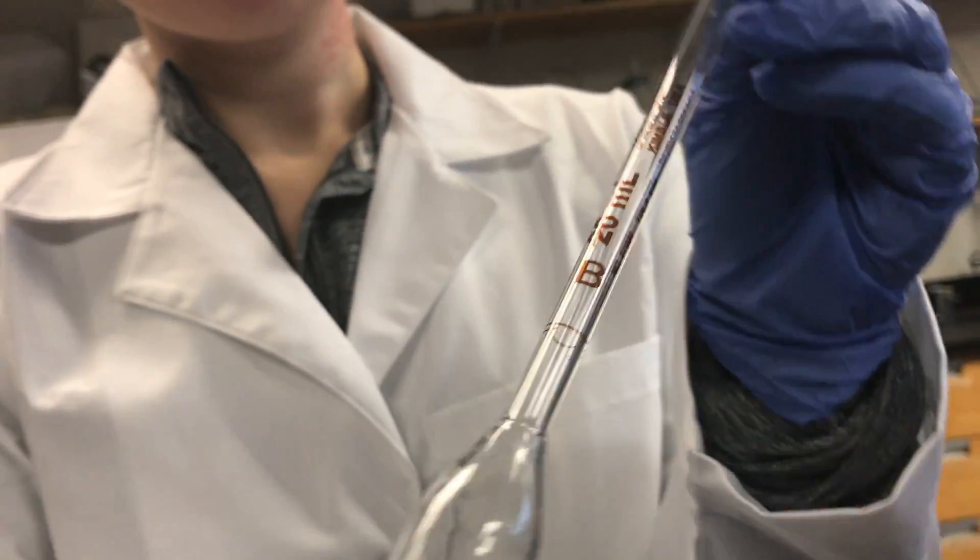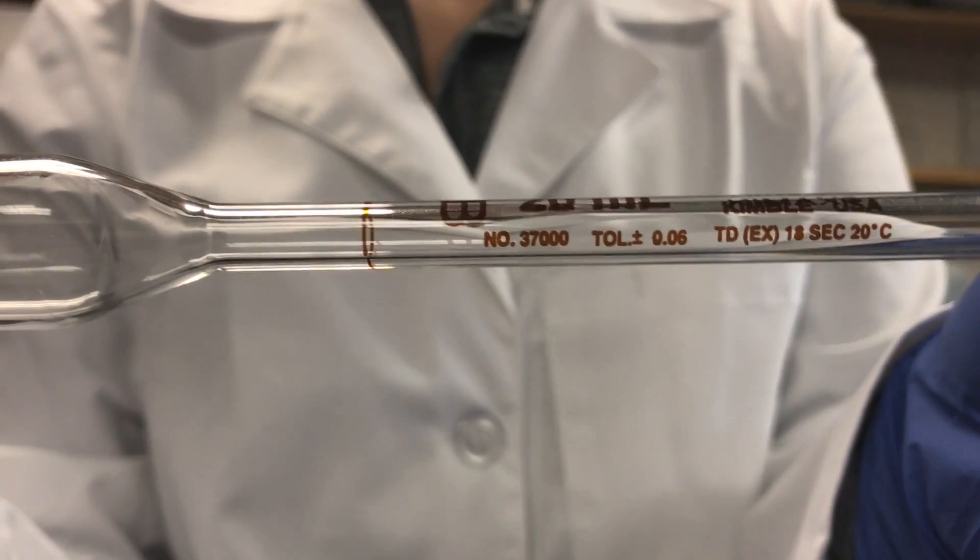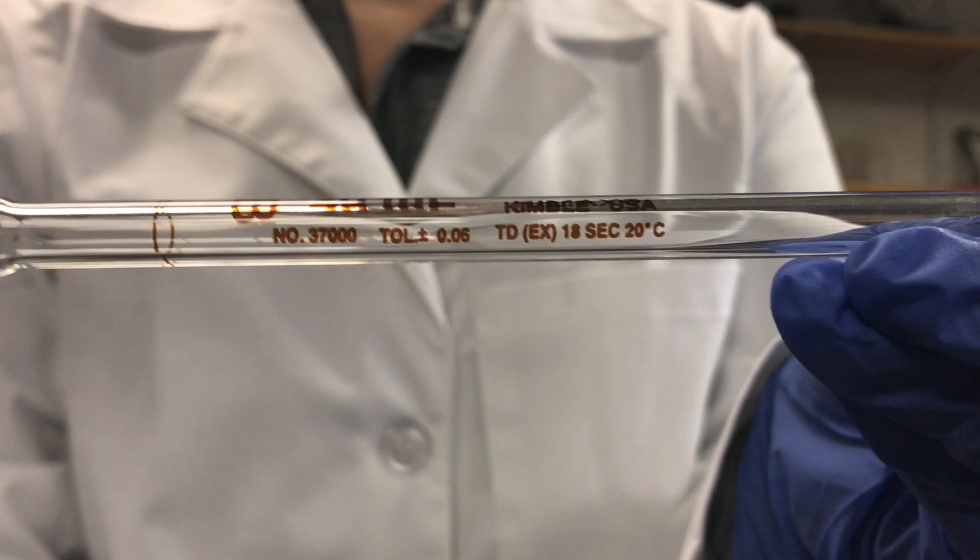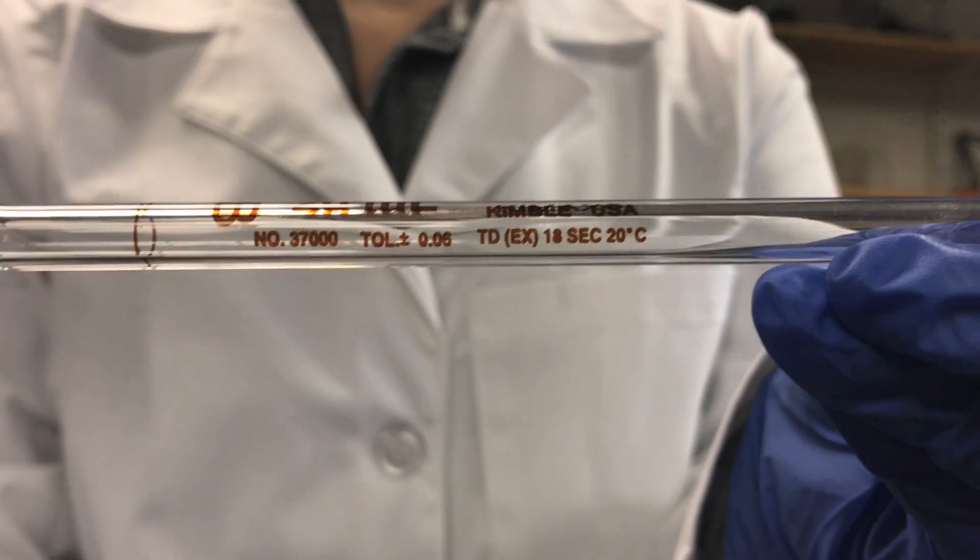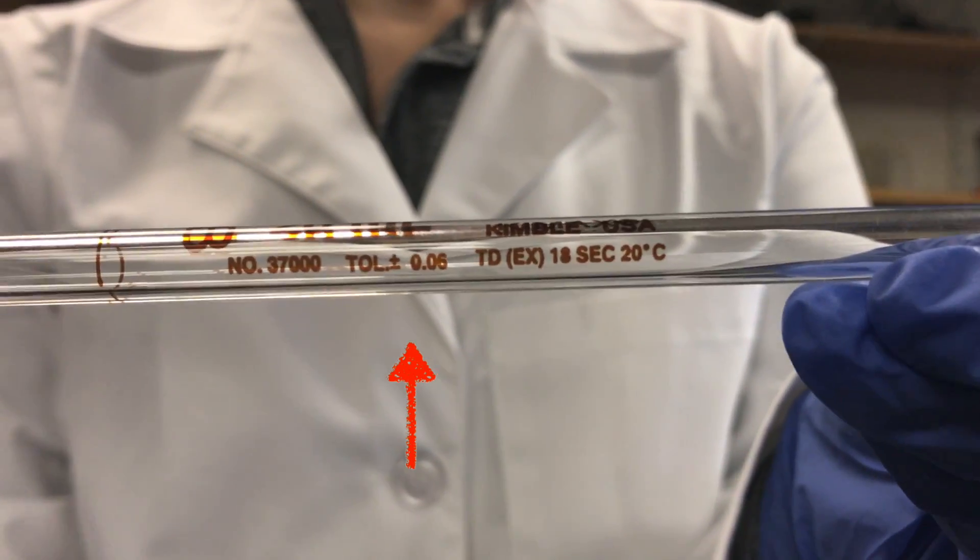Sometimes the error can be located directly on the glassware. For example, this piece of glassware is class B, which has a standard error of 0.06 milliliters.